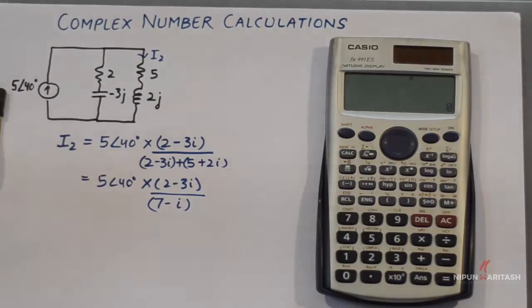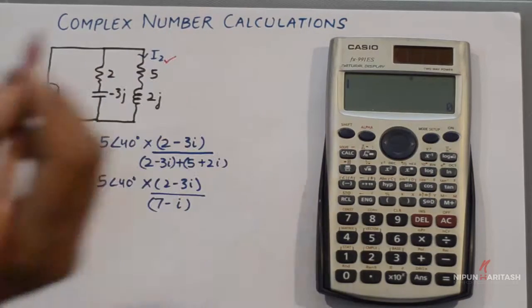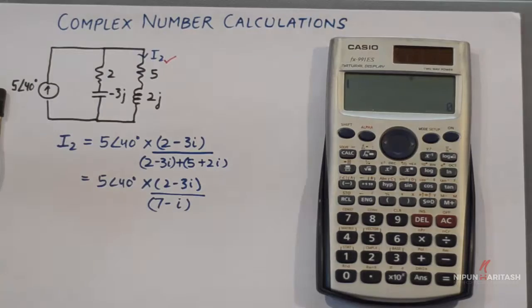For example, I have a problem from network analysis where we need to find the current in the second branch. This current can easily be found using the current division rule.